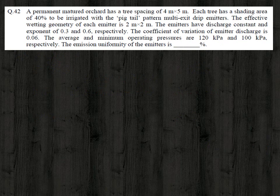The third question: a permanent mature orchard has a tree spacing of 4 by 5 meter. Each tree has a shading area of 40 percent, to be irrigated with a pigtail pattern multi-exit drip emitter system. The effective wetting geometry of each emitter is 2 by 2 meter. The emitter discharge constant and exponent are 0.3 and 0.6 respectively.